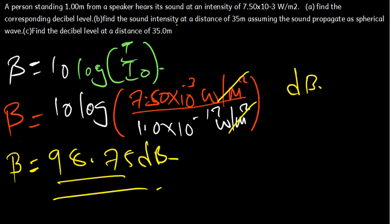Part B is asking us to find the sound intensity at a distance of 35 meters, assuming the sound propagates as a spherical wave. We want to find intensity I₂ at 35 meters. The intensity we found before — 7.50×10⁻³ — we will call that intensity I₁.